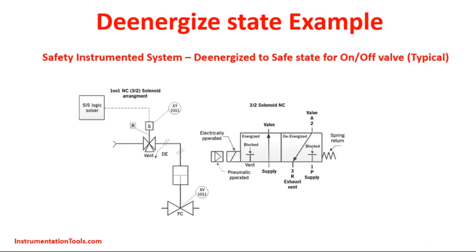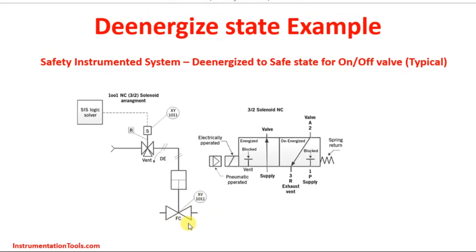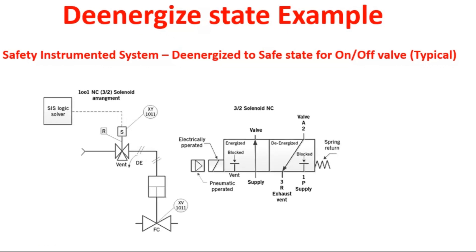We are going to see the detailed example briefed in the earlier slide. This is a SIS valve — a safety instrumented system valve — it is an on-off valve. FC stands for fail-closed position: whenever there is no air or no power, the valve goes to the closed position. The valve is being operated through a SIS logic solver, which gives the electrical power output to the solenoid valve to open and close.